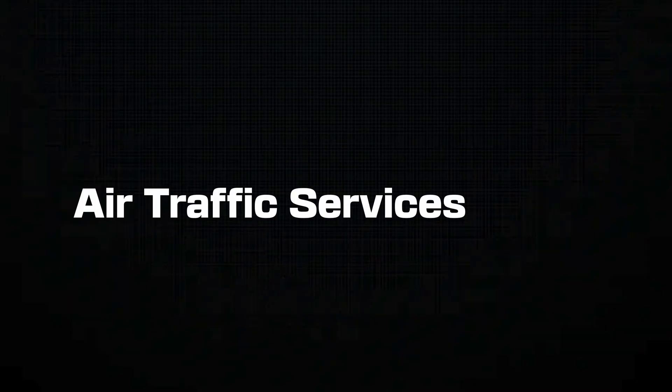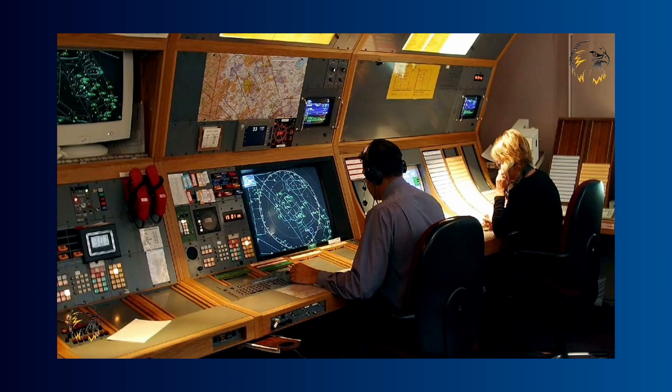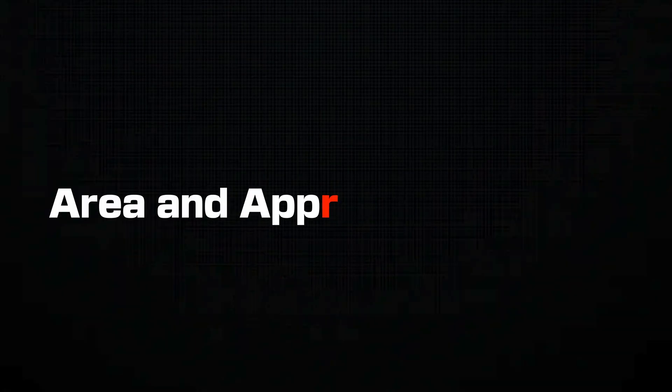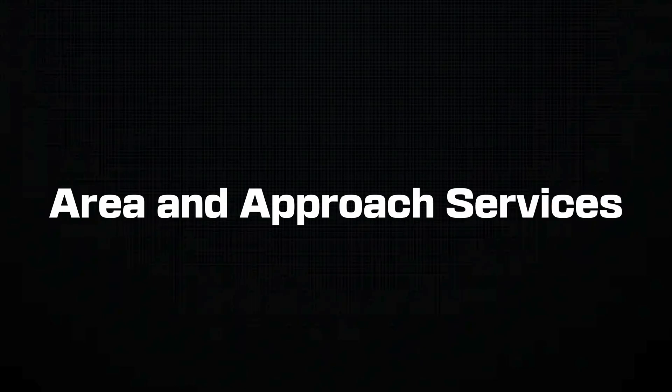Air Traffic Services, also known as ATS — you will learn how the entire ATC system works. ATS includes Flight Information Services, Alerting Services, and Air Traffic Advisory Services. This helps you understand how aircraft are managed in controlled and uncontrolled airspace. Know the difference between procedural and radar-based separations.